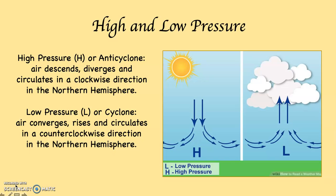Let's look at this diagram on the right-hand side. With high pressure, also known as an anticyclone, high pressure is indicated on a map with a capital H. From very far aloft — aloft is spelled A-L-O-F-T, meaning very high up in the atmosphere — the air descends, which means it subsides. It diverges, and in the Northern Hemisphere, it circulates in a clockwise direction. The arrows indicate that the air is descending and diverging.